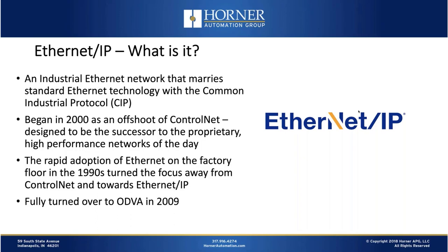So what is Ethernet IP? In a good definition, it's an industrial Ethernet network that marries standard Ethernet technology with what's called the Common Industrial Protocol, or CIP. When I say standard Ethernet technology, I mean there's really nothing special hardware-wise that you have to purchase to implement Ethernet IP — industrially hardened in many cases, yes, but standard hardware. It has its origins in something called ControlNet.